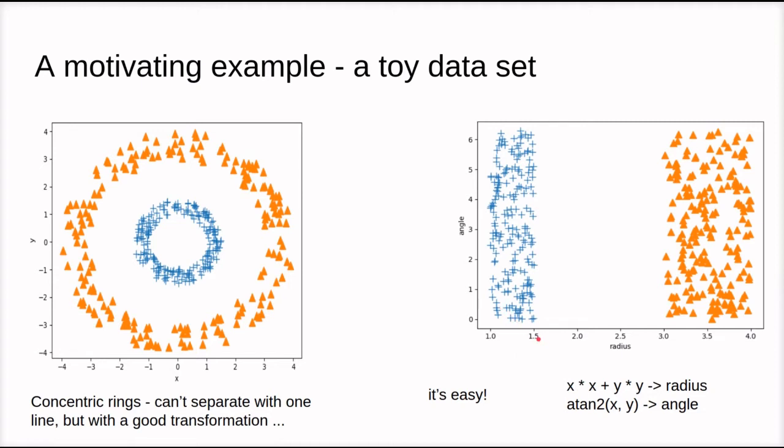The data points here are represented by the radius and then their angle with the x-axis, and I think it becomes simple to see that it's easy to put a straight line, a decision boundary, that separates the two sets of data points. In fact, we can actually put an infinite number of lines in between here.